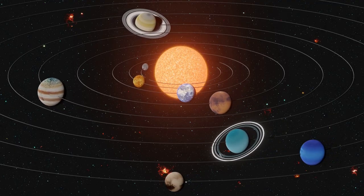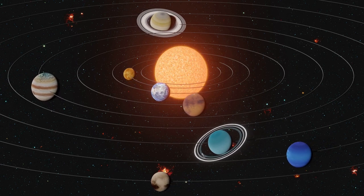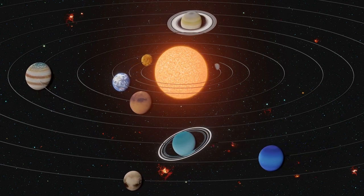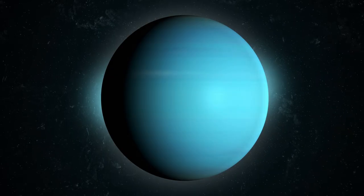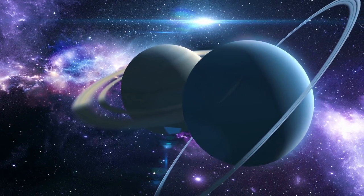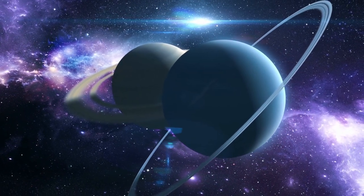Uranus took shape when the rest of the solar system formed about 4.5 billion years ago, when gravity pulled swirling gas and dust in to become this ice giant. Like its neighbor Neptune, Uranus likely formed closer to the sun and moved to the outer solar system about four billion years ago, where it is the seventh planet from the sun.